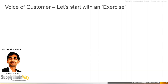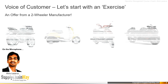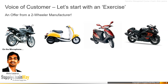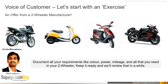Now the exercise is: there is an offer from a two-wheeler manufacturer. The offer is you will get a two-wheeler at free of cost, and very importantly, whatever you ask for in the two-wheeler will be provided to you. It could be the color you want, the shape you want, and whatever power you want. All that you ask for will be manufactured as per your specifications. So take the next two to three minutes to quickly document all your requirements — like color, power, mileage — and keep it ready. Please pause this video, complete your requirements, and then come back.